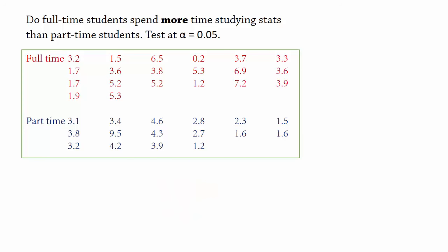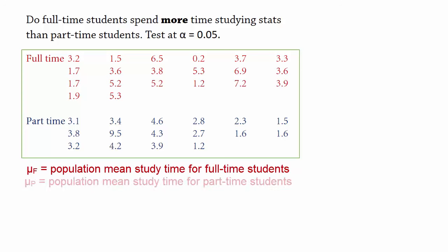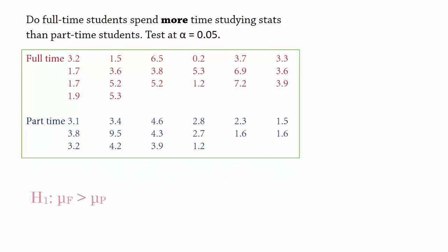If we let mu f and mu p represent the population mean study time for full-time and part-time students respectively, then the alternative hypothesis will be mu f greater than mu p, or mu f minus mu p greater than 0. The null hypothesis will then be that mu f minus mu p is less than or equal to 0.